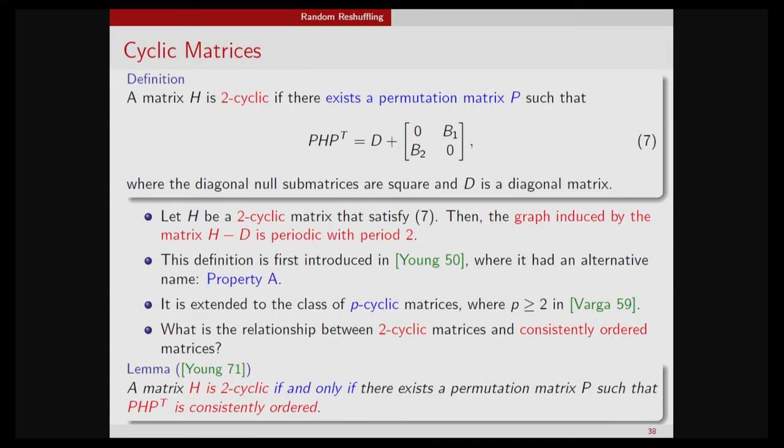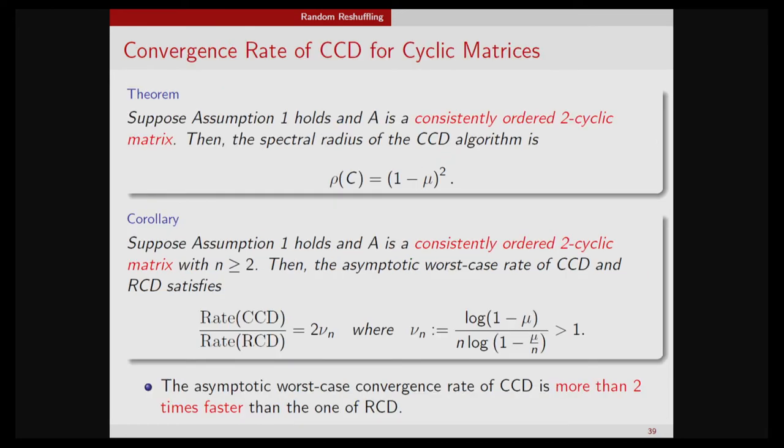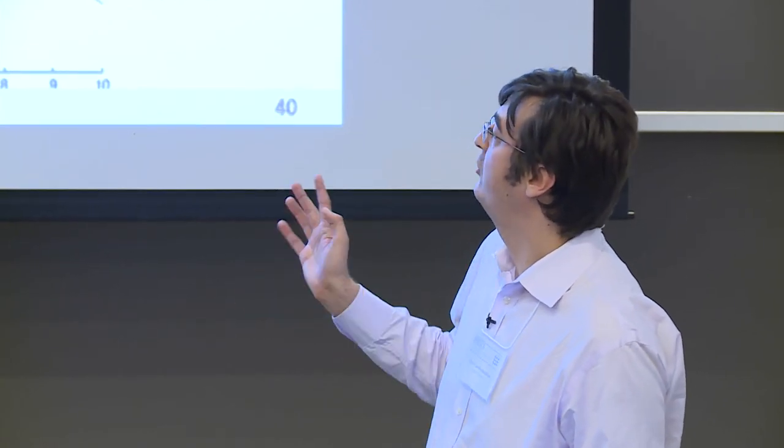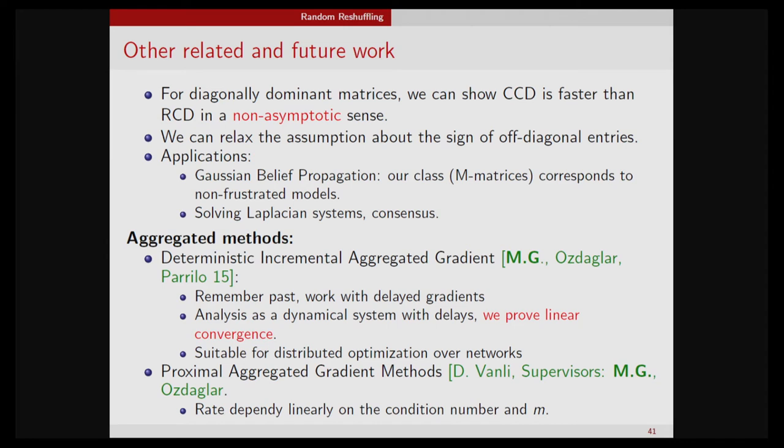For computing the spectral radius of a positive matrix, you can relate it to walks over the graph. What is interesting is that you can show speedups that can be arbitrary. For Laplacian-like systems, any deterministic order is better than the randomized approach, and we also have a way of characterizing the best order.